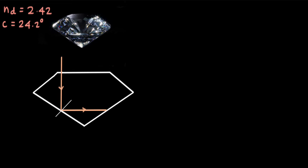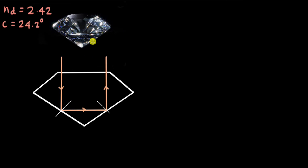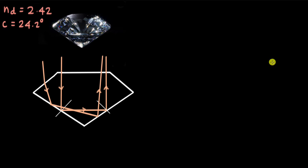After undergoing a couple of total internal reflections — sometimes maybe more — the ray exits from the top. To a viewer looking at the diamond from the top, it looks as if the light is simply streaming out from inside the diamond. And that is what gives diamond its shine or sparkle — it is just reflecting the light around it.